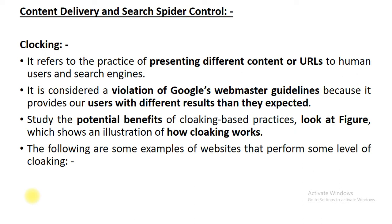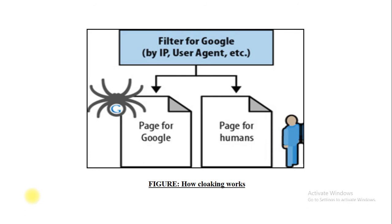Whenever your website is implemented using the concept of cloaking, the result would be unexpected. Because the way the search engine sees the output is totally different from the way it is presented to customers. To study the potential benefit of cloaking, we have one figure which represents how cloaking works. You can see there is an image of a spider, a person with a page created for humans, and one page created for Google or any search engine.